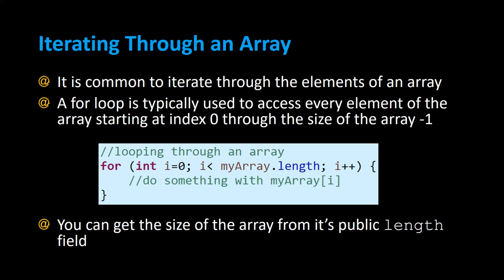In this example you can see a looping structure where we loop through an array. It typically looks like this: the word 'for' followed by 'int i = 0' — that's the initialization part where i represents the index. Then you continue looping while i is less than the array's dot length, where length is a public field that gives you the size of the array. After every loop iteration we increment i to go to the next index.